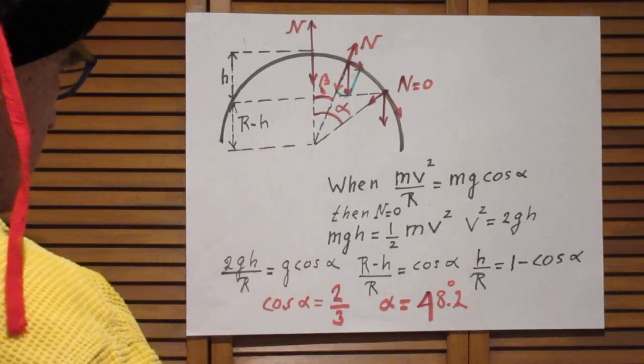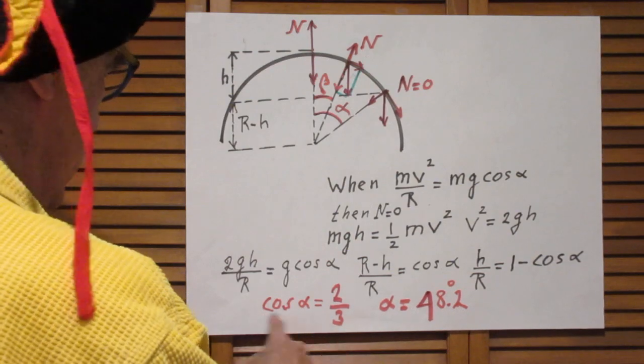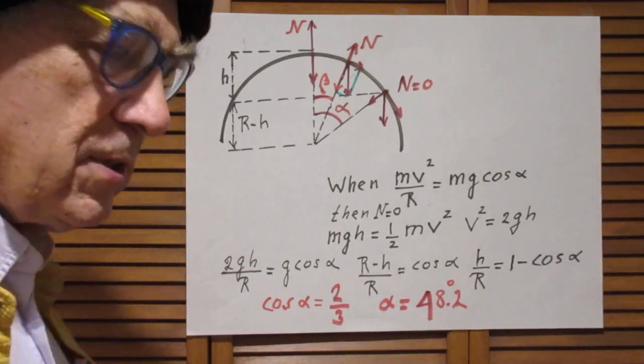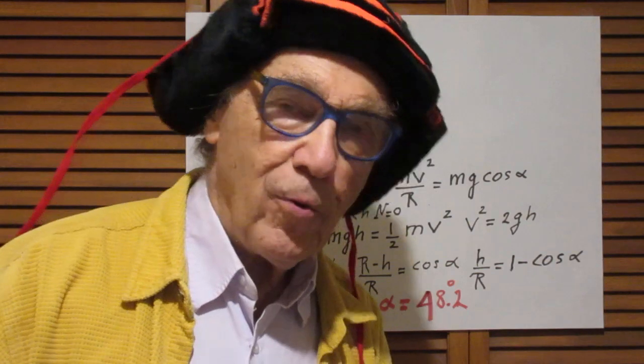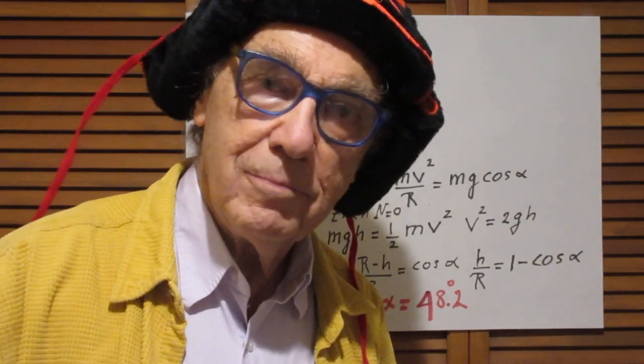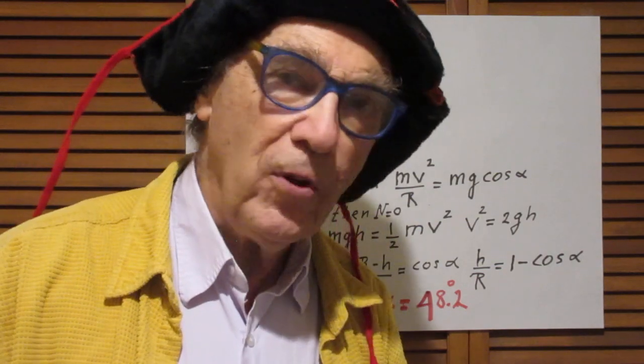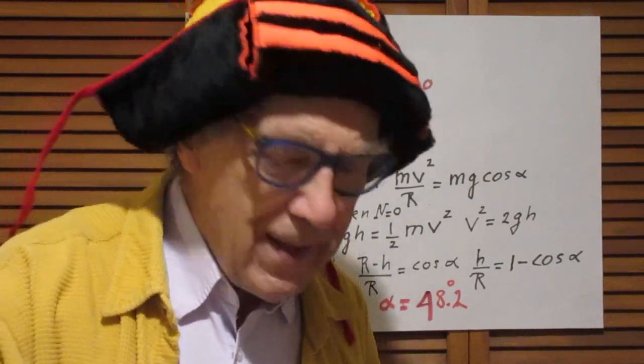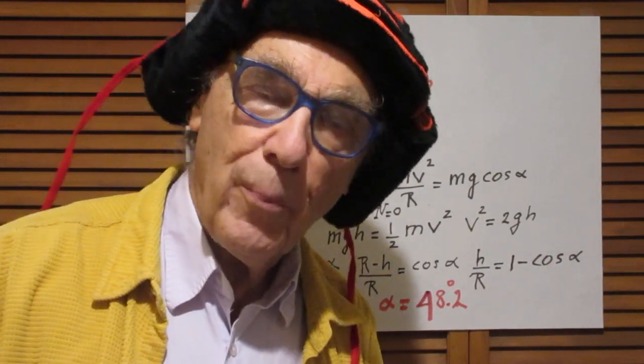Your g goes away. And you find immediately that the cosine of alpha is 2 thirds. And the angle alpha therefore is a little larger than 48 degrees. It's independent of the radius r. And it's independent of the mass of the person.